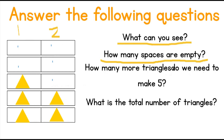How many more triangles do we need to make five in column one? We already have three. So three plus what number will give us five? Great job — that will be two. We need two more triangles in column one to make the number five. How about in column two? We already have two triangles. How many more do we need to make the number five? Perfect — we need three more.